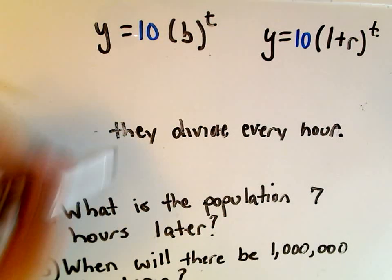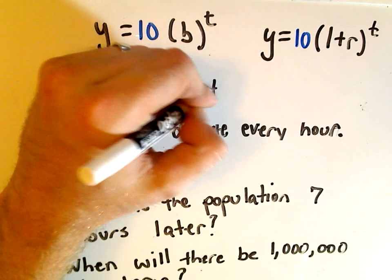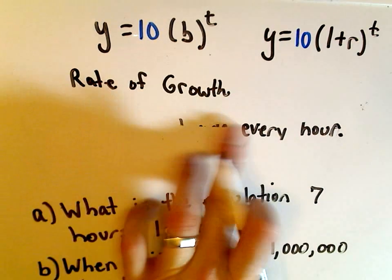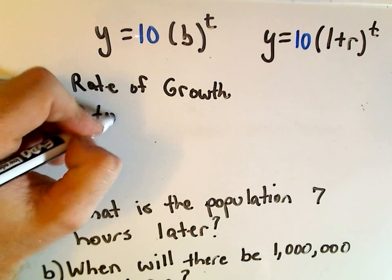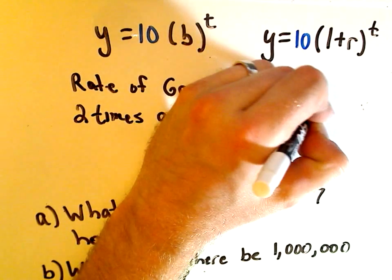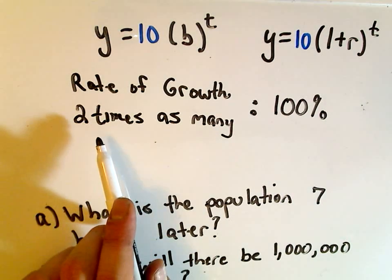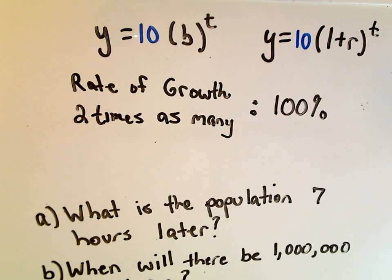So what does that mean? Well their rate of growth - you want to think about the rate of growth as a percentage, the rate of growth per hour. Well if they divide every hour you're getting twice as many as what you had before, so we're going to get two times as many. So if we get two times as many that's going to be a growth rate of a hundred percent. Now be careful, a lot of people will say well if they're dividing in two it's doubling and that's a growth rate of two hundred percent, but that's not correct.